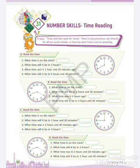What time will it be? Let us solve part A first. What time is on the clock? It is 8 o'clock. And what time will it be in 3 hours — that means in the next 3 hours, 8 plus 3 is equal to 11 o'clock.